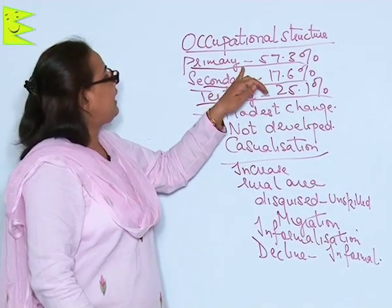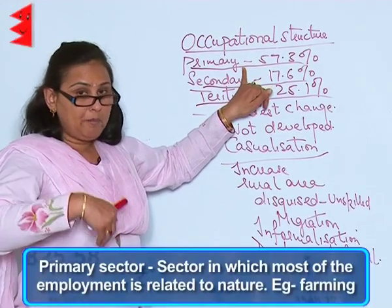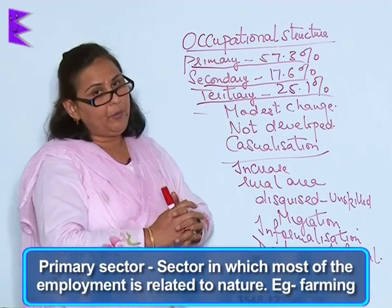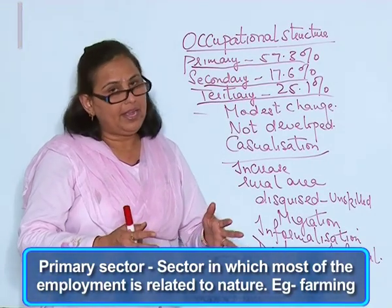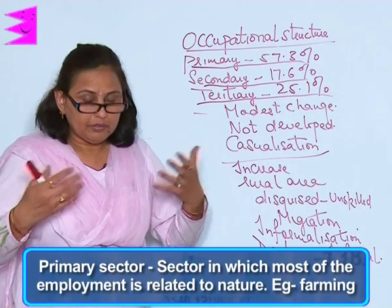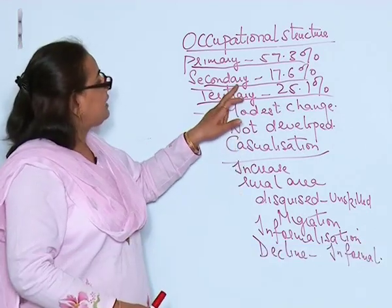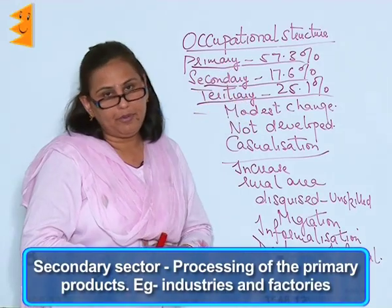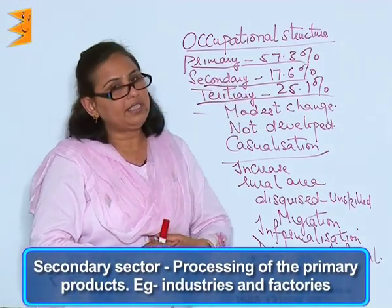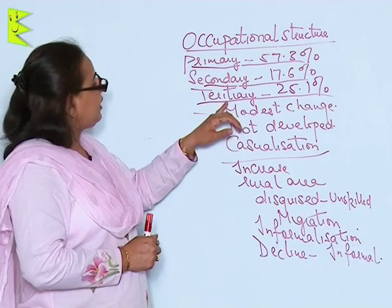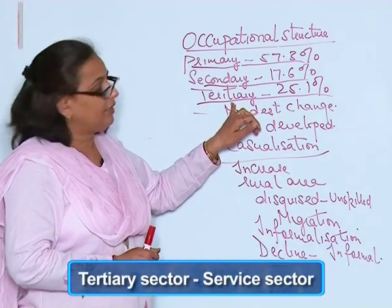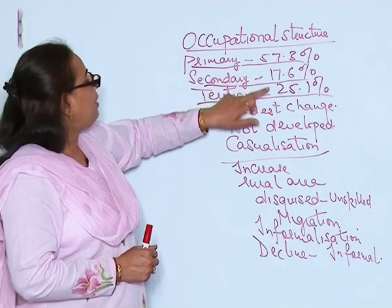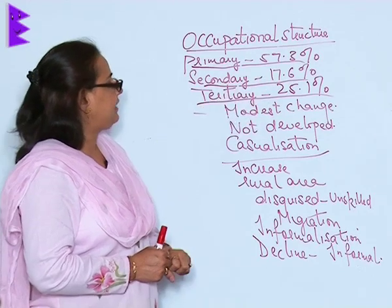The primary sector is where most employment is associated with nature — farming and related activities. The secondary sector means the processing of primary products, the industries and factories. The tertiary sector is the service sector. The highest employment is in the primary, followed by the tertiary, and last is the secondary sector.